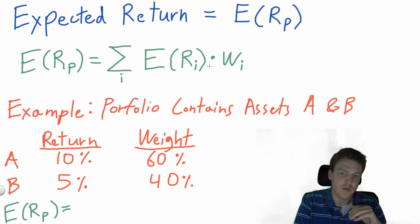So you add that up for every asset in the portfolio. We'll show one example of a portfolio that contains two assets, A and B. Asset A has an expected return of 10% and makes up 60% of the portfolio. Asset B has an expected return of 5% and makes up 40% of the portfolio.